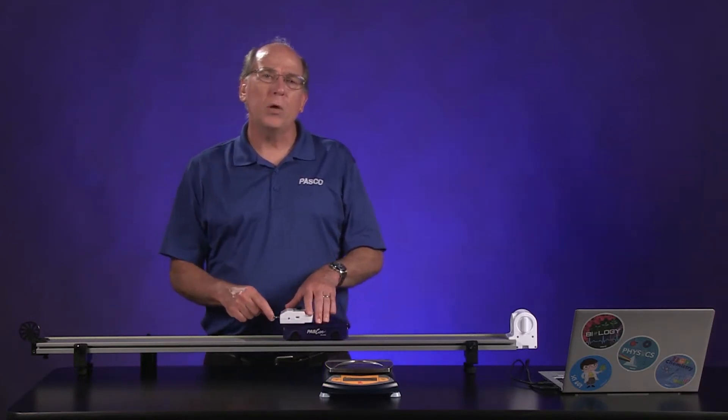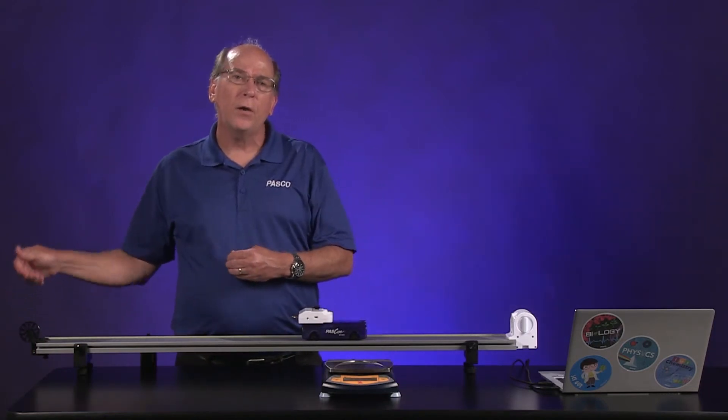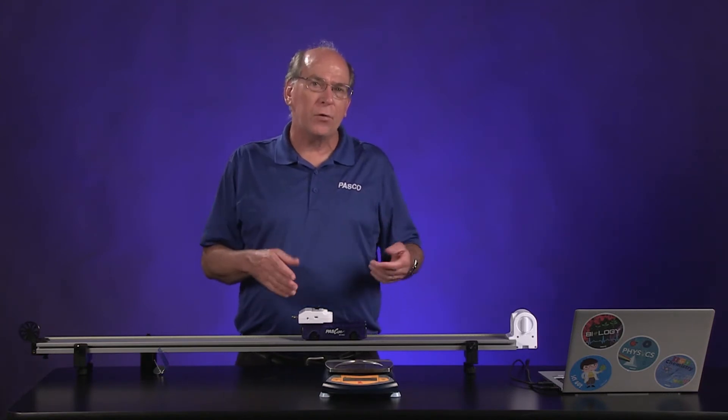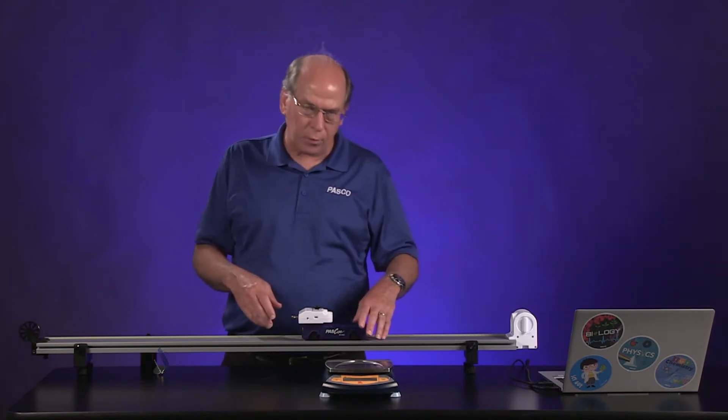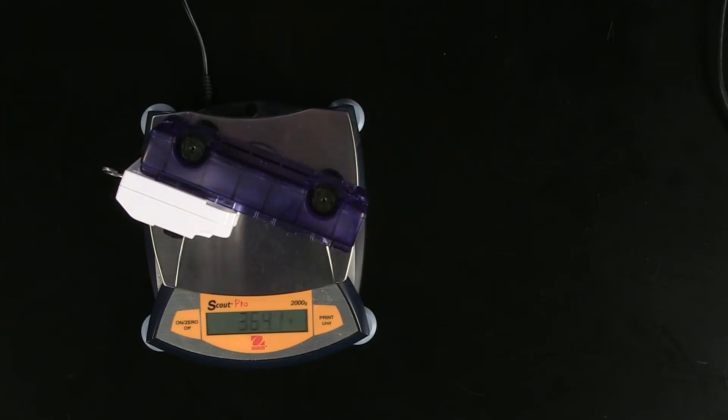So we're interested in measuring how the kinetic energy of the cart changes as it is pulled down the track. For that, we need to know the mass of the cart with the force sensor attached. And so it's about 0.36 kilograms.